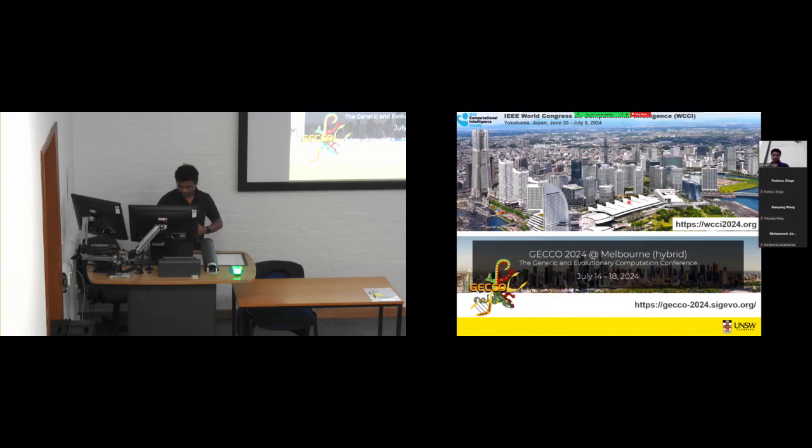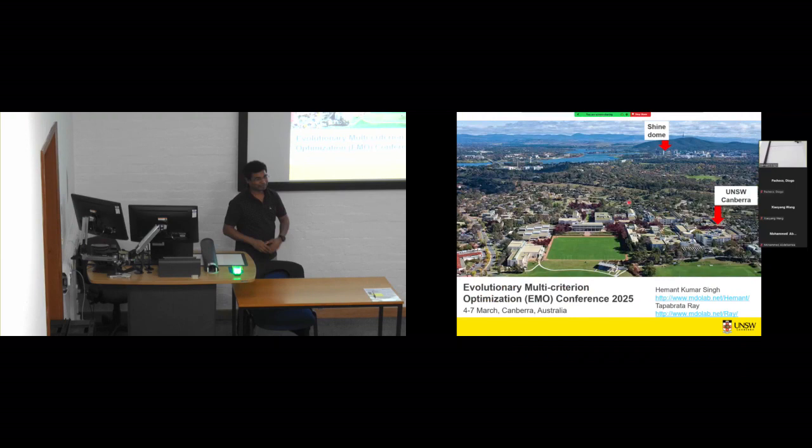So I went through these very quickly, but I hope we'll have more time to discuss them in these two conferences, CEC in Yokohama next year and Gecko in Melbourne next year. But this is the one I am most excited about. So we have evolutionary multi-criterioning optimization conference in 2025 in Canberra where I live and work. So I am general chair along with Professor Ray and also Professor Joshua Nose. So it's a single track conference focused on all aspects of multi-objective optimization. And we hope that those of you who work in it would consider traveling to Canberra and attending the conference with us. Thank you.